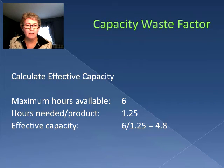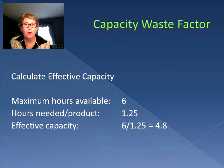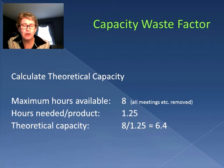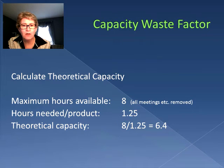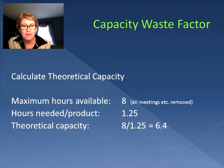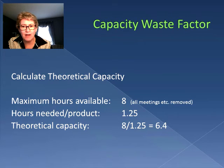Now we calculate the theoretical capacity. We remove those two hours of meetings and paperwork. So now our maximum hours available is eight, with the same number of hours per product — one and a quarter. So now our theoretical capacity is 6.4 products.